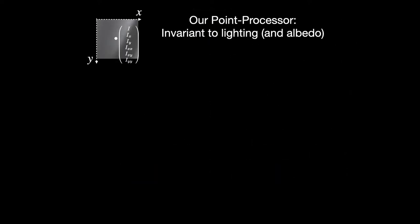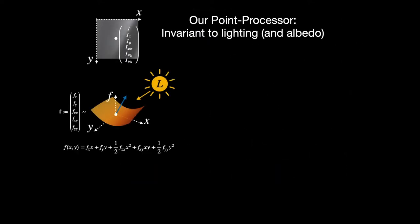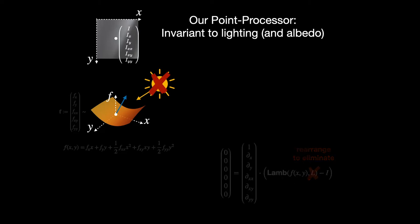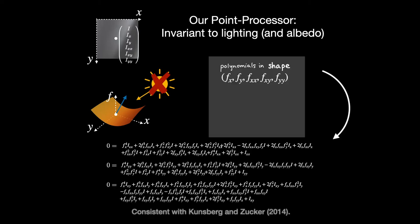To do this, we assume that the surface is locally of second order, and we take partial derivatives of Lambert's law. Then the most important step, we can rearrange these equations to eliminate the lighting and albedo entirely. This gives us image-induced polynomial constraints on shape that do not involve albedo or lighting.